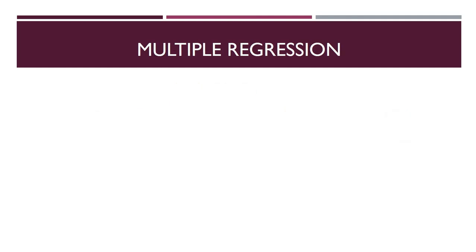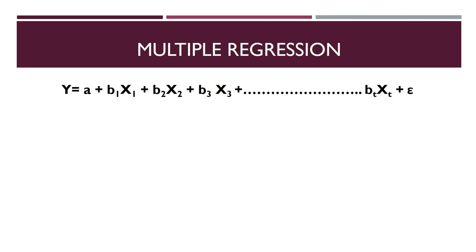Now for the multiple regression equation: since there is more than one independent variable, the equation is y = a + β1·x1 + β2·x2 + β3·x3 + ... + residuals. Some variables are taken into account, but there will still be factors not considered that are hidden in the residuals. Residuals are those factors which we have not considered but which can still impact the dependent variable y.